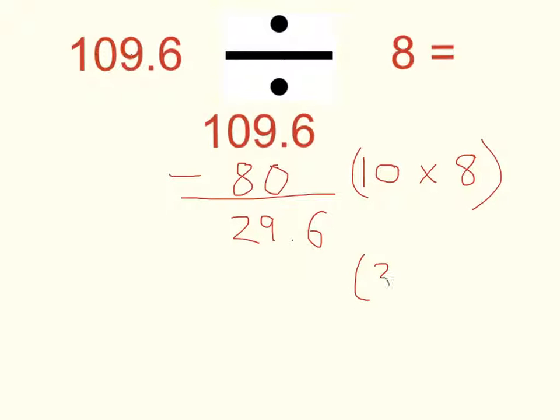3 lots of 8 is 24. I'm going to take 24 away from 29.6, which leaves 5.6.